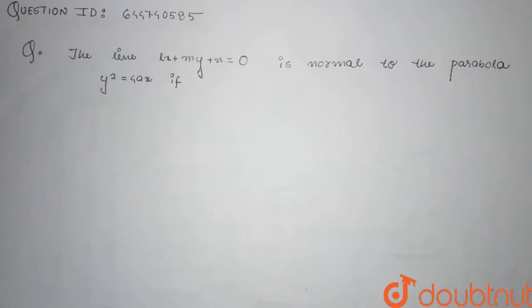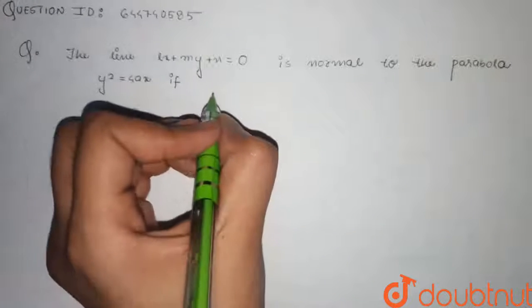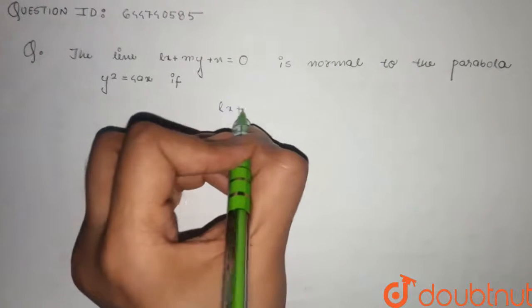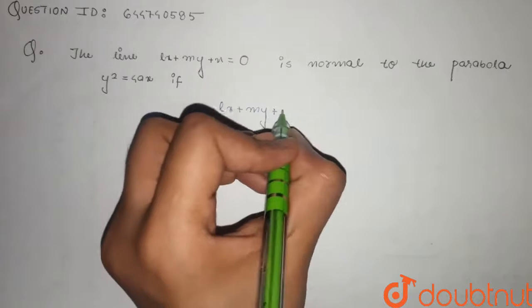The line lx + my + n = 0 is normal to the parabola y² = 4ax if... So the equation of line given to us is lx + my + n = 0.